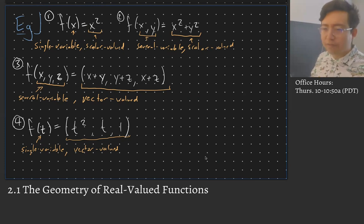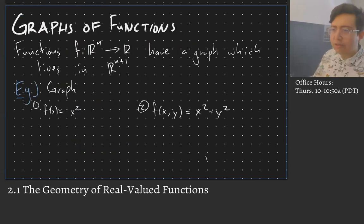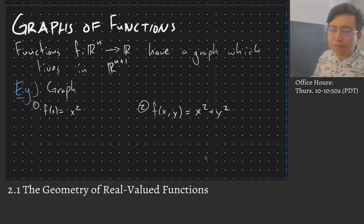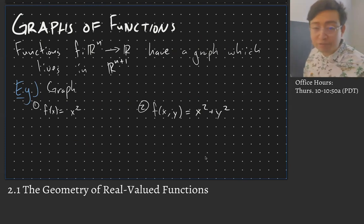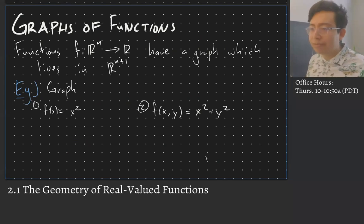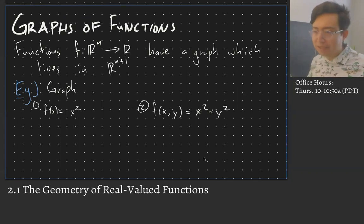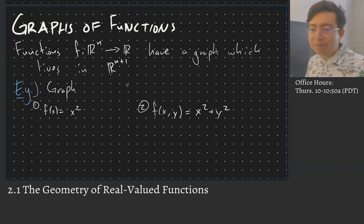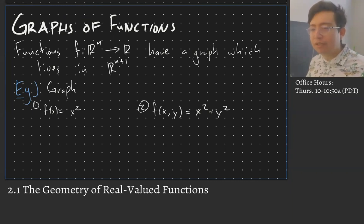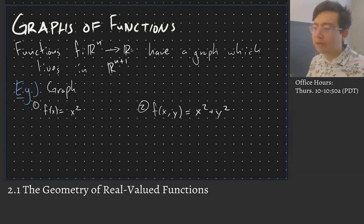This is just learning the basics of what functions look like, but we can actually start doing stuff with them. When we first learned about functions back in regular single-variable scalar-valued calculus, we learned how to graph them — lines, parabolas, and so on. Functions in higher dimensions also have graphs. For a function from Rⁿ to R — a several-variable scalar-valued function — its graph lives in Rⁿ⁺¹.